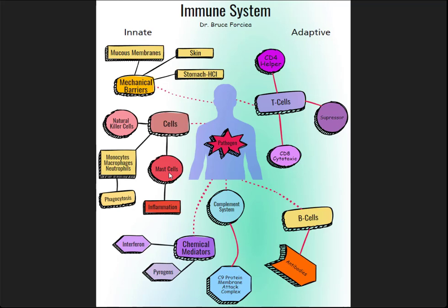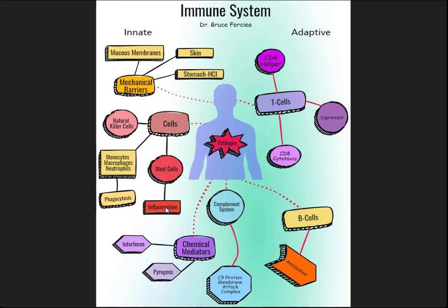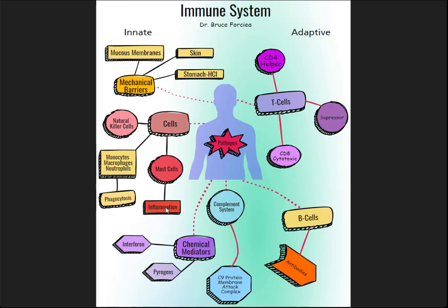There are also mast cells. Mast cells have to do with inflammation. Mast cells contain chemicals — these include heparin, histamine, kinins, prostaglandins, and leukotrienes — and they promote inflammation.